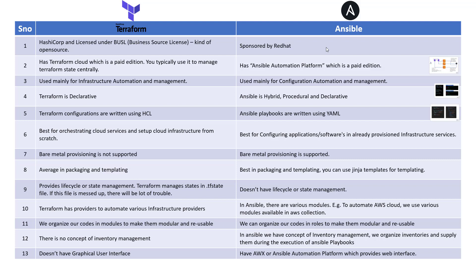Typically an organization will go with the enterprise edition, which has many additional features. Point number two is about whether enterprise editions are available for both tools. Yes, enterprise editions exist for both. You can use Terraform Cloud to write your Terraform config files and manage state centrally — we'll talk about what state means in a minute. On the other side, there is the Ansible Automation Platform, a paid product that gives you a nice web interface to manage automation in your IT environment.